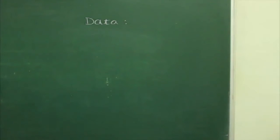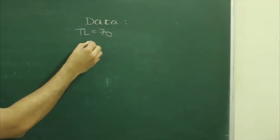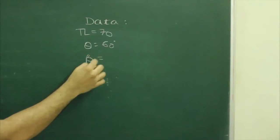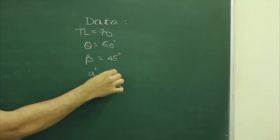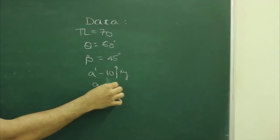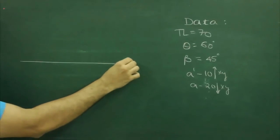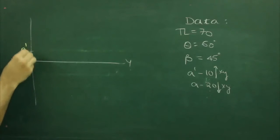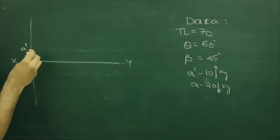We will write the given data: true length 70, theta 60 degrees, inclination to auxiliary vertical plane means theta 45 degrees. a-dash is 10mm above XY, and a is 20mm below XY. First we will draw XY and mark a-dash and a.